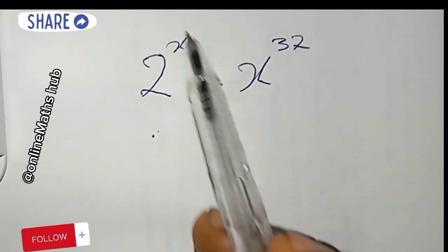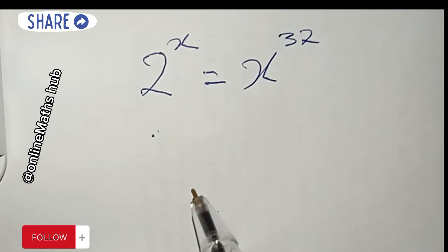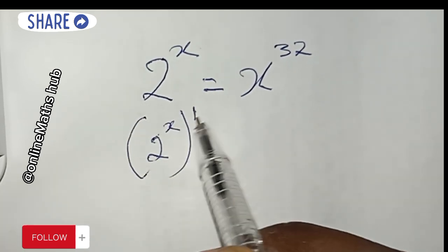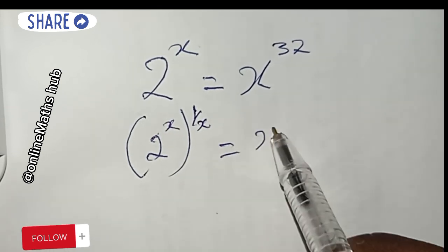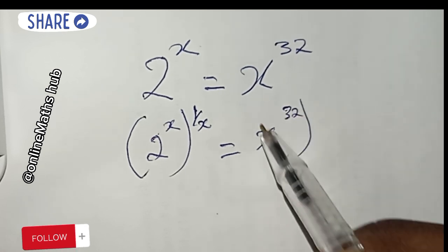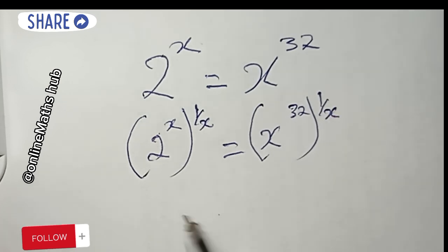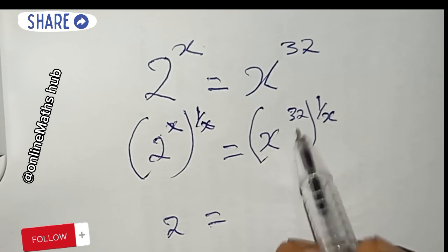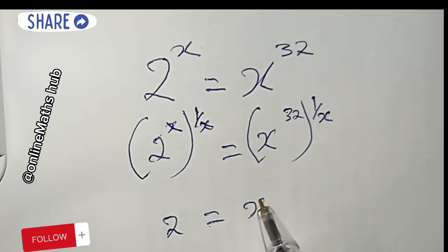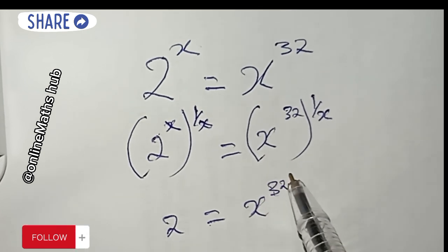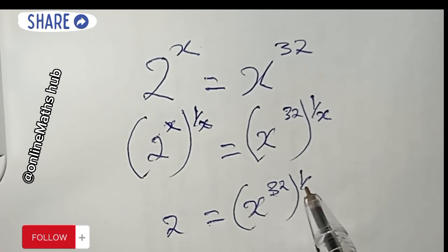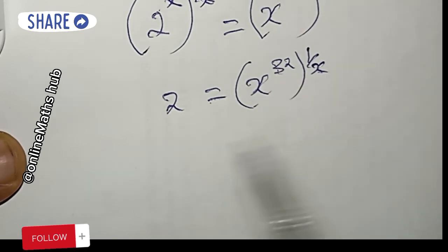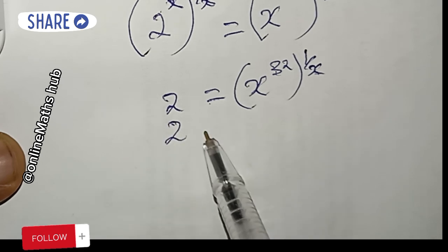What I'm going to do is eliminate x from the left hand side by raising both the left hand side and the right hand side to the power of 1 over x. This cancels the exponent on the left, leaving 2 is equal to x to the power 32, all raised to the power 1 over x. Using the rule of indices, I can bring the 1 over x inside.